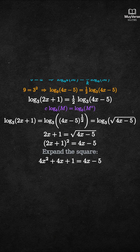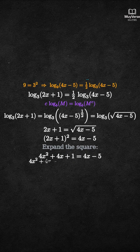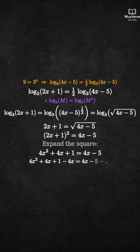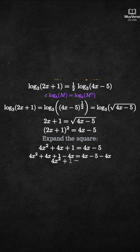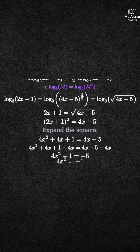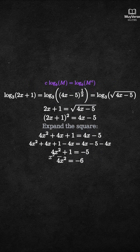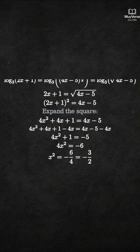Step 4: Solve the resulting quadratic equation carefully. Subtract 4x from both sides, then subtract 1 from both sides, and finally divide by 4. We obtain x squared equals negative 3 halves.